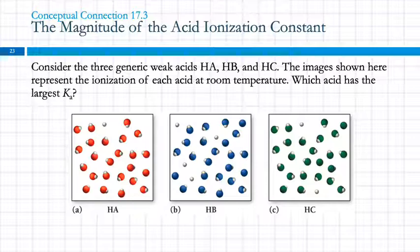So consider three generic weak acids, HA, HB, and HC. The images shown represent the ionization of each acid at room temperature. Which acid has the largest Ka? A large Ka means it ionizes more, right?